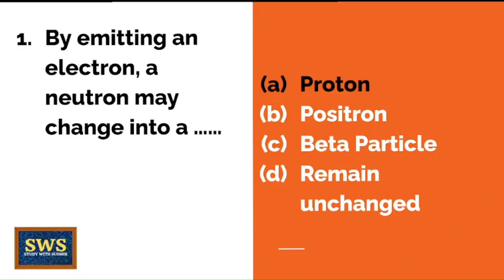By emitting an electron, a neutron may change into a proton, positron, beta particle, or will it remain unchanged? The correct answer is a proton.